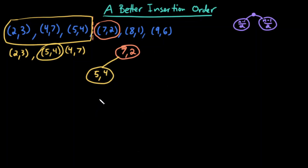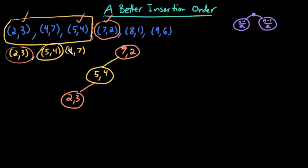Now in the next layer I'm looking at x-coordinates again. The remaining item on the left side of (5,4) is (2,3). 2 is less than 7, 3 is less than 4, so it goes on the left. I've inserted (2,3), (5,4), and I'll also insert (4,7) — it's a single element so I don't have to worry about order. 4 is less than 7, so it goes left. 7 is greater than 4, so it goes right.